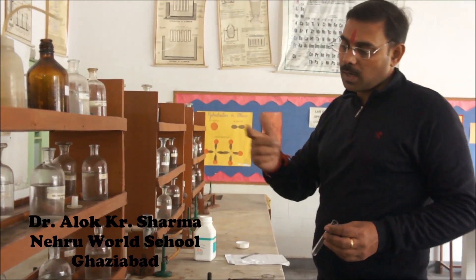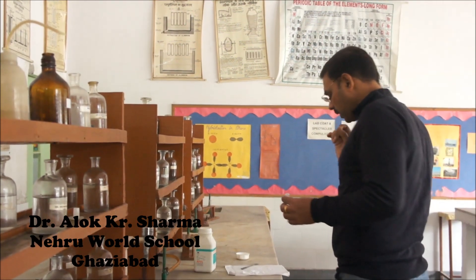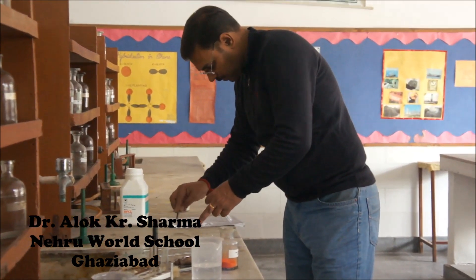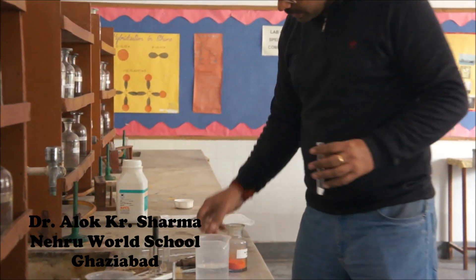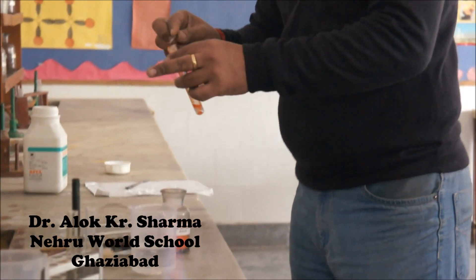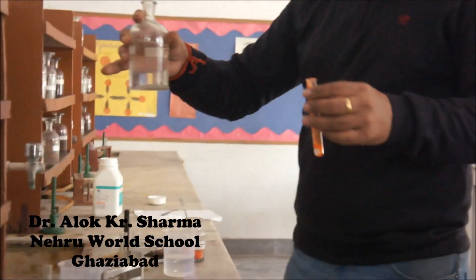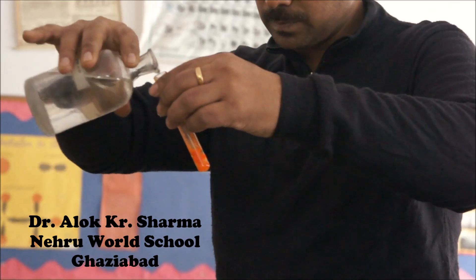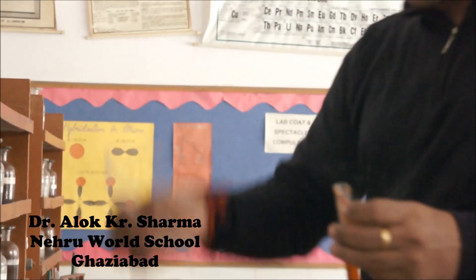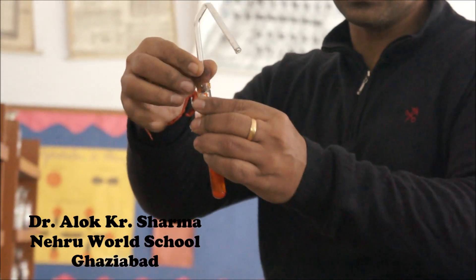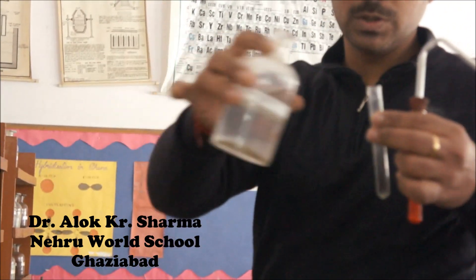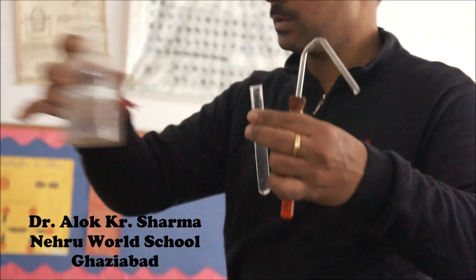Another test of chloride is the chromyl chloride test, a very useful test. For this test, we take salt and an equivalent amount of solid K2Cr2O7, then add concentrated H2SO4. After that, we heat this test tube and pass the gas through the delivery tube into another test tube in which we have already taken sodium hydroxide (NaOH).